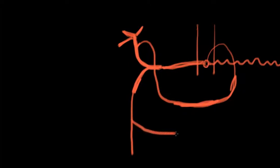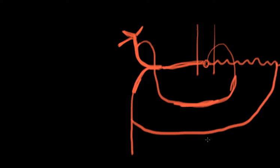The gastroduodenal artery continues down and branches here. This branch is called the right gastro-omental artery, which follows the greater curvature of the stomach. The left gastro-omental artery actually comes off the splenic artery, and they meet up in the middle — both following the greater curvature of the stomach.